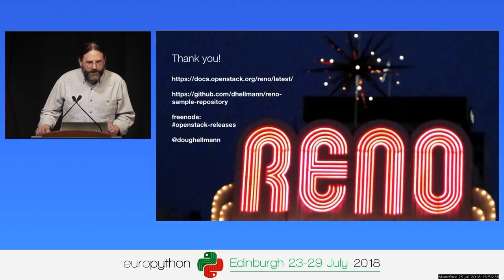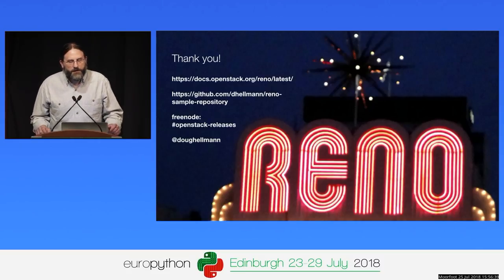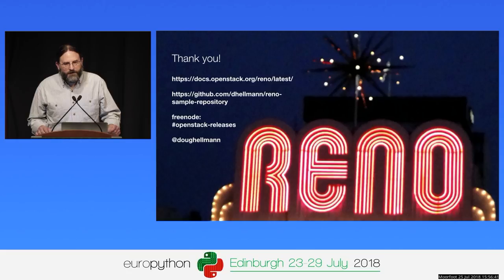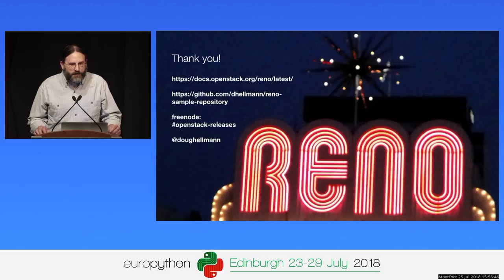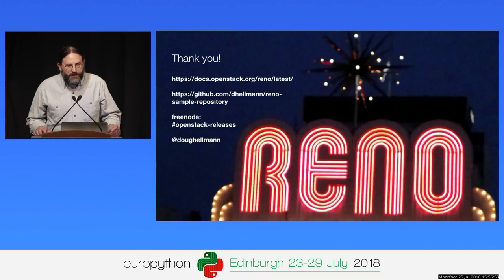Question from audience: Is Reno only for Git right now, and do you have any plans for other VCS? And would it be easy to contribute support for another VCS — is it just callbacks plus settings, or would it require forking the whole thing?